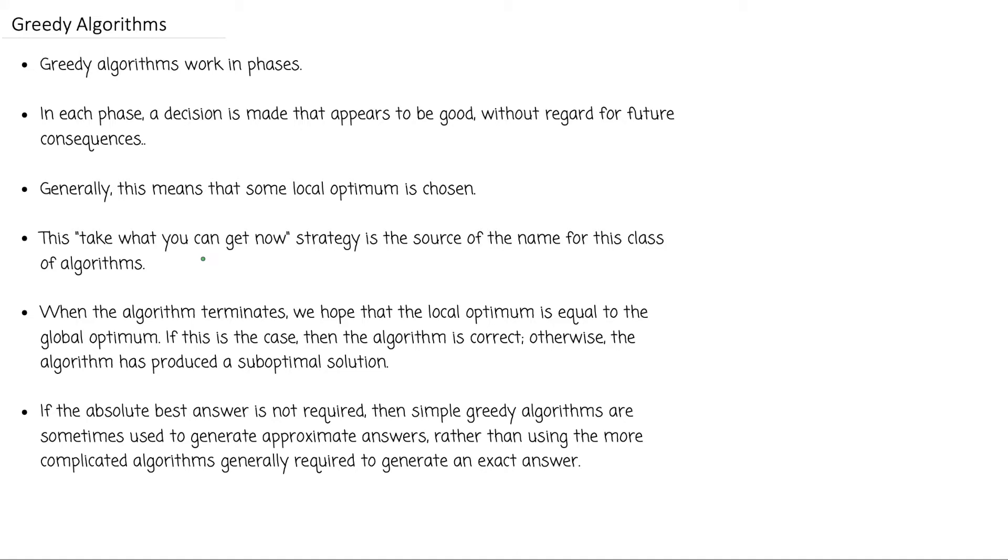It is like 'take what you can get now' and that strategy is the source of the name for this class of algorithms. When the algorithm terminates, we hope that the local optimum is equal to the global optimum. If this is the case, the algorithm is correct; otherwise, the algorithm has produced a suboptimal solution. In several cases, we will go for that suboptimal solution because if the absolute best answer is not required, then simple greedy algorithms are sometimes used to generate approximate answers rather than using more complicated algorithms generally required to generate the exact global optimal answer.